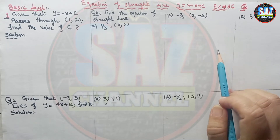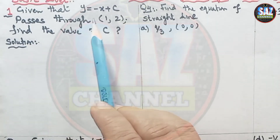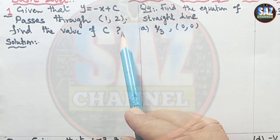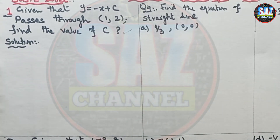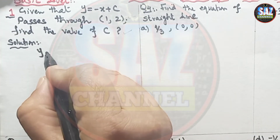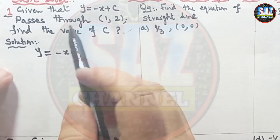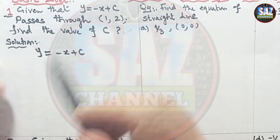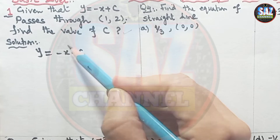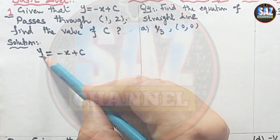Let's move to question one. The question says: given that y = -x + c passes through the point (1, 2), find the value of c. This is a very easy question. Since the line passes through the point (1, 2), we replace x with 1 and y with 2 in the equation.